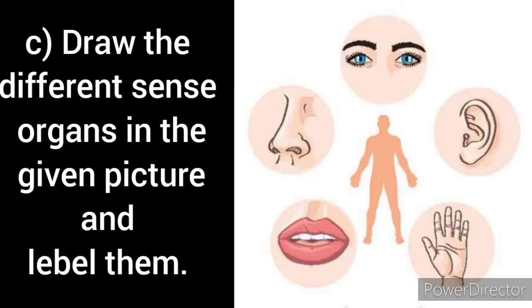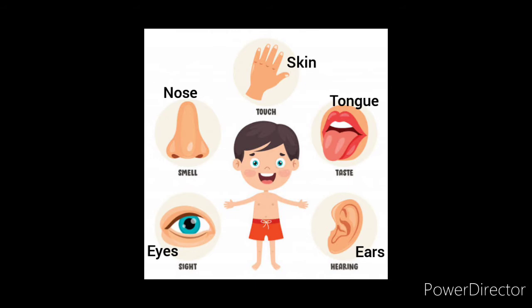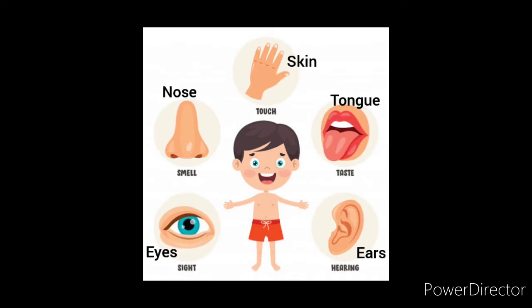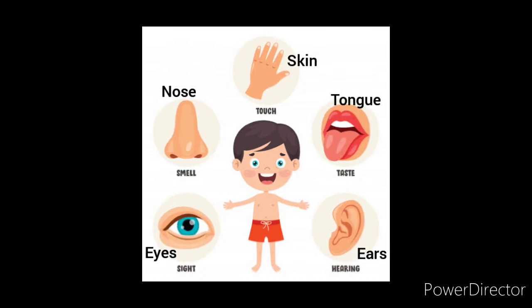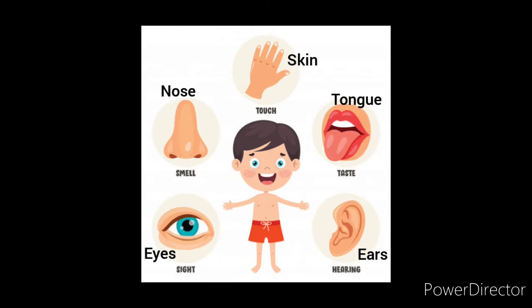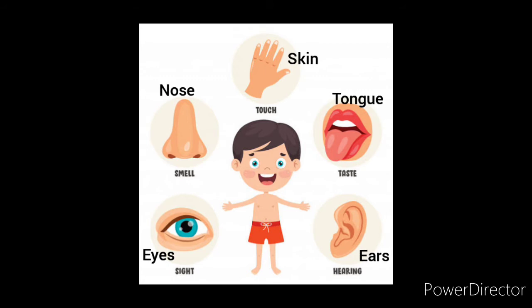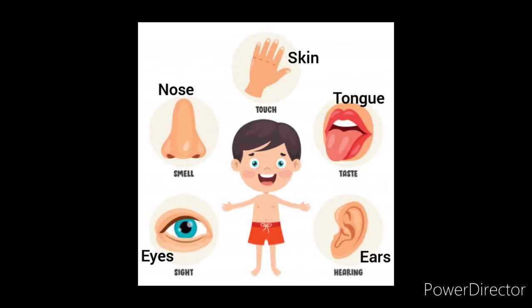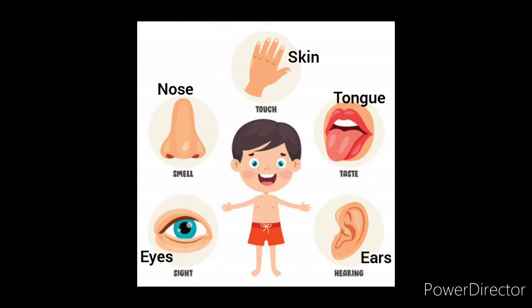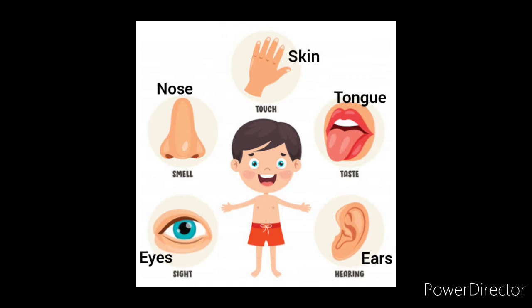Activity C: draw the different sense organs in the given picture and label them. A picture is given, so draw the sense organs and label them. The sense organs are: eyes for seeing (sight), ears for hearing, nose for smell, tongue for taste, and skin for touch.